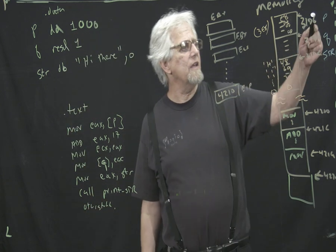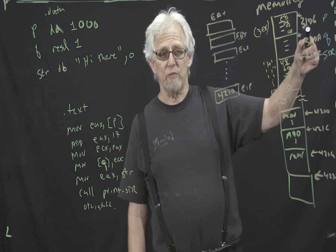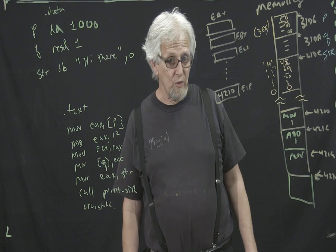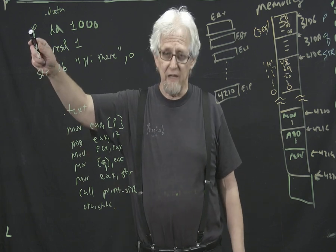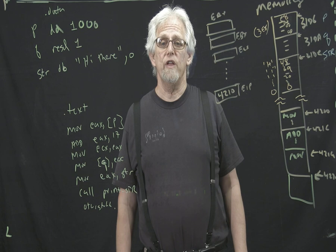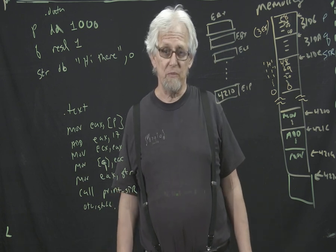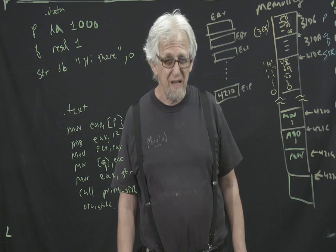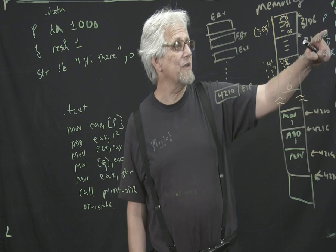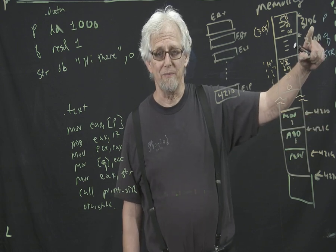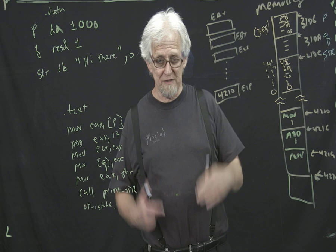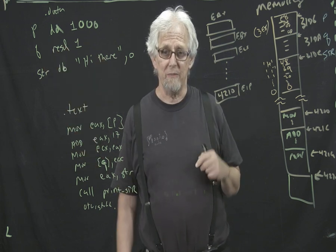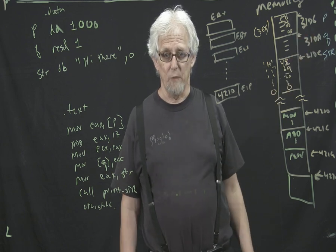Over here we see the address in memory is 31D6. So effectively, every time in your program you refer to the label P, the computer — the assembler, before your program starts to run — replaces every place that you put P as a variable name. It replaces it with this number, 31D6. So if we look inside your program as it's sitting there ready to run in memory, every place you had P as a variable name is going to be this number.